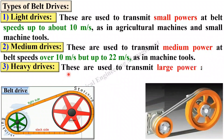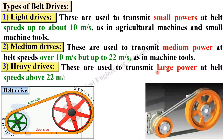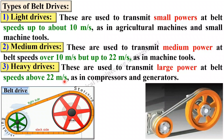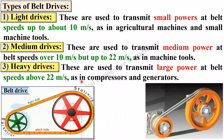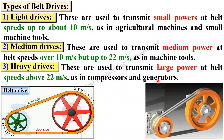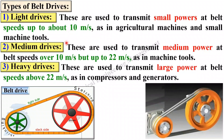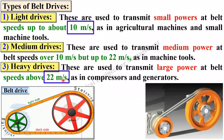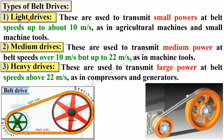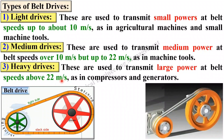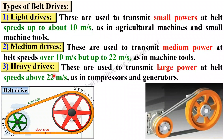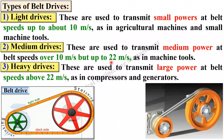Heavy drives are used to transmit large power at belt speed above 22 meters per second, and are generally used in compressors and generators. You only need to remember two values: 10 meters per second and 22 meters per second. Less than 10 is for light drives, more than 22 is for heavy drives, and in between 10 to 22 is for medium drives.